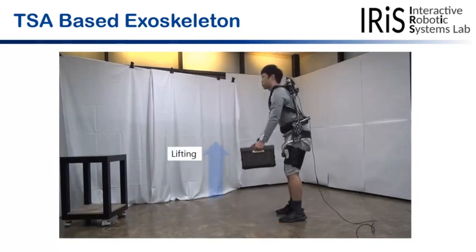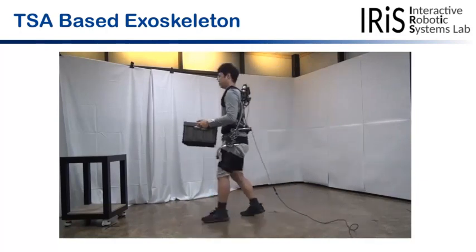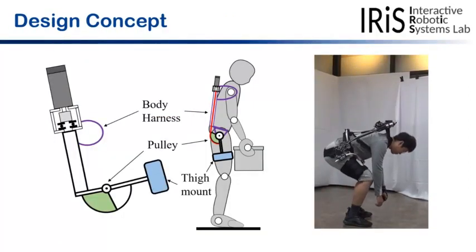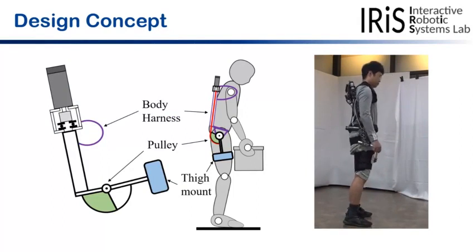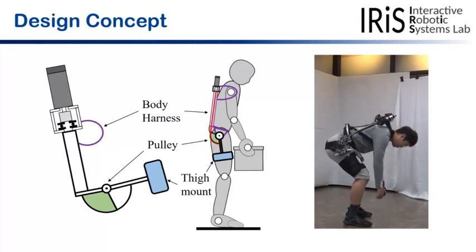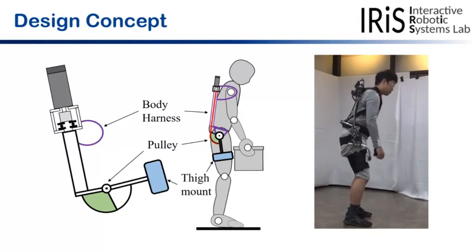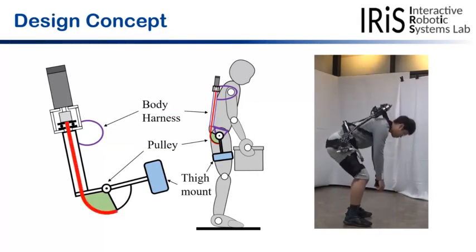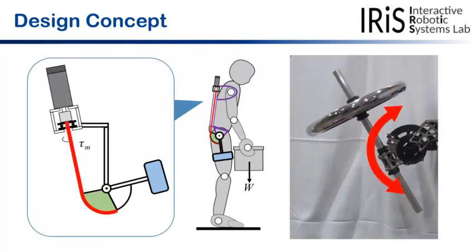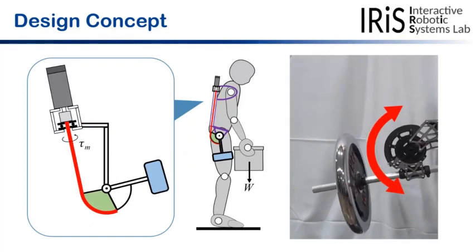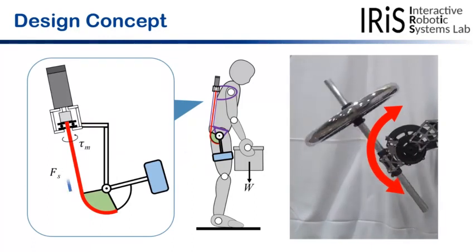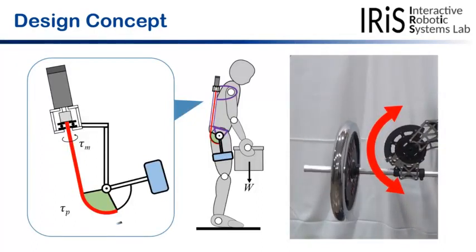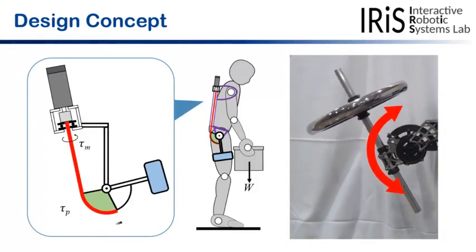This can compensate for the added hip joint torque due to the load on the hands. For designing our exoskeleton, we chose the most straightforward way to make the device compact and lightweight as possible. The string of TSA is routed along the wearer's back to the hip joint. The motor torque is converted into a large linear force through a twisted string.